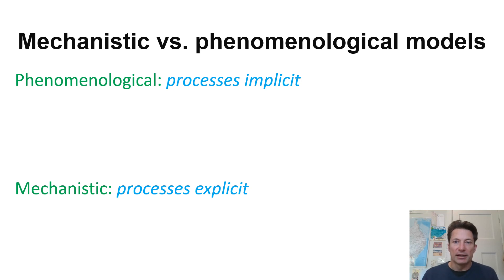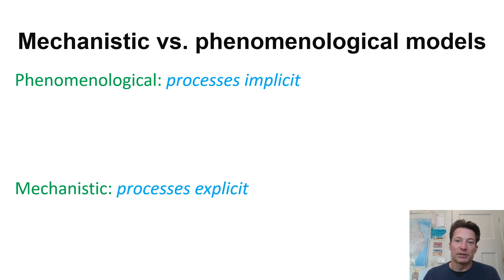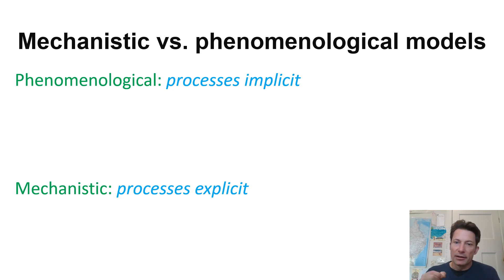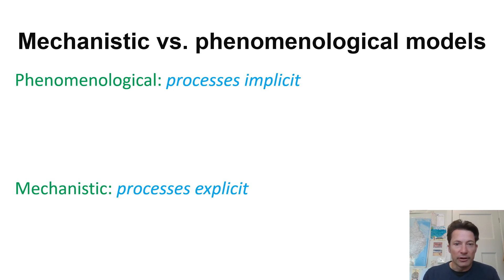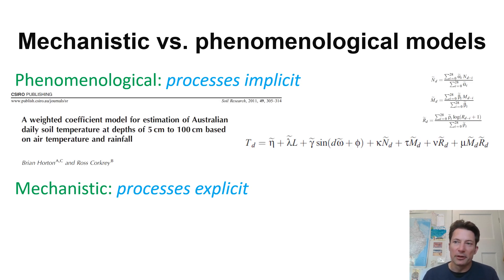I'm using the word 'mechanistic' and I want to be clear about what I mean by that versus the term 'phenomenological.' Sometimes people call them formal models or correlative models. The distinction I'm trying to make is between things that are explicit about processes and things that are implicit about processes. The phenomenological models are process-implicit — they model things at the level of the phenomena of interest and don't break it down into sub-processes about the actual underlying mechanisms, whereas a mechanistic model does.